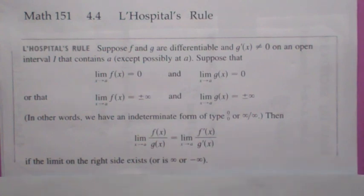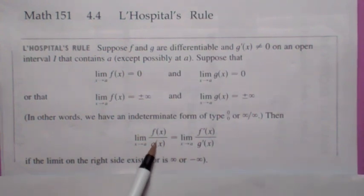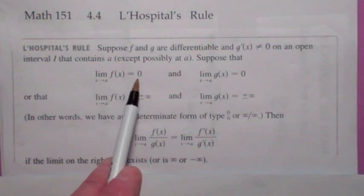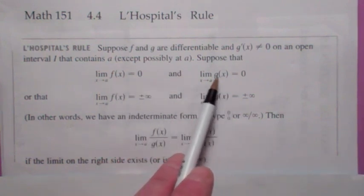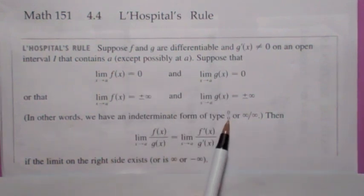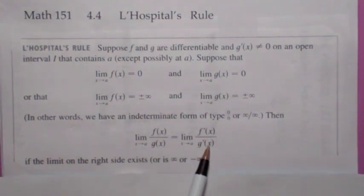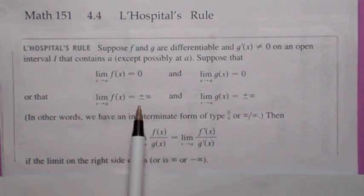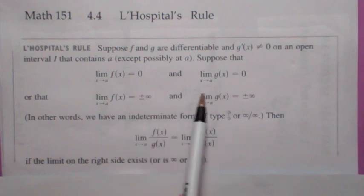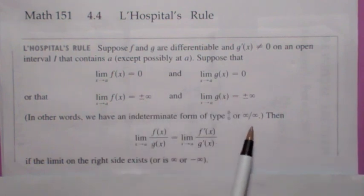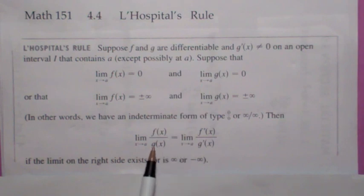L'Hôpital's Rule says this: if you have a limit of a quotient of two functions, and if both the top function and bottom function are getting close to zero — the indeterminate form zero over zero — then the limit will be the same as the limit of the quotient of the derivatives of the two functions. The other form is if the top and bottom are both getting close to plus or minus infinity — the indeterminate form infinity over infinity — you can also use it. The limit of the quotient equals the limit of the quotient of the derivatives.